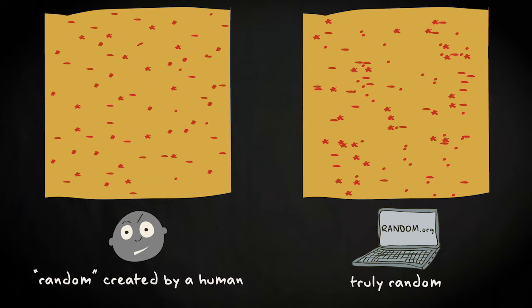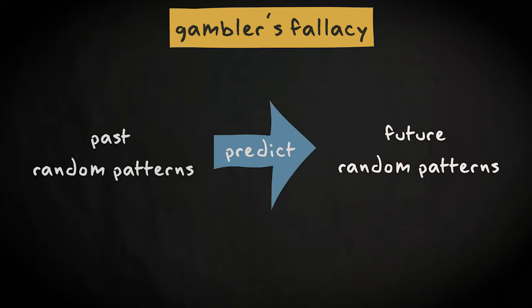Another example of over-interpreting randomness is the so-called gambler's fallacy, the false idea that a random phenomenon can be predicted from a series of preceding random phenomena.